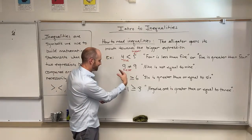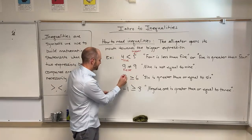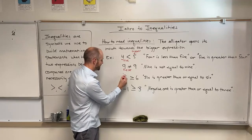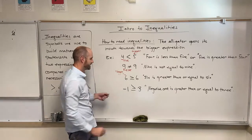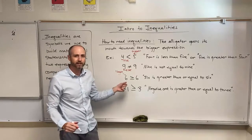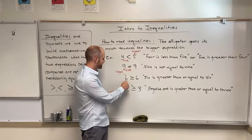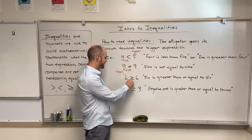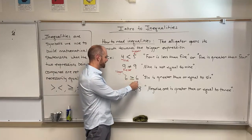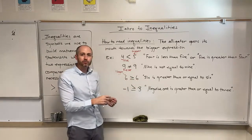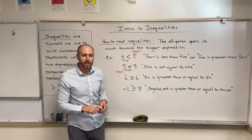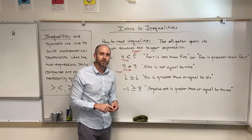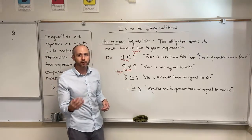The next statement says six is greater than or equal to six. The alligator mouth is opening up towards the left-hand side, so the inequality is telling us the left-hand side is bigger. So we read it as: six is greater than or equal to six. That is a true statement.